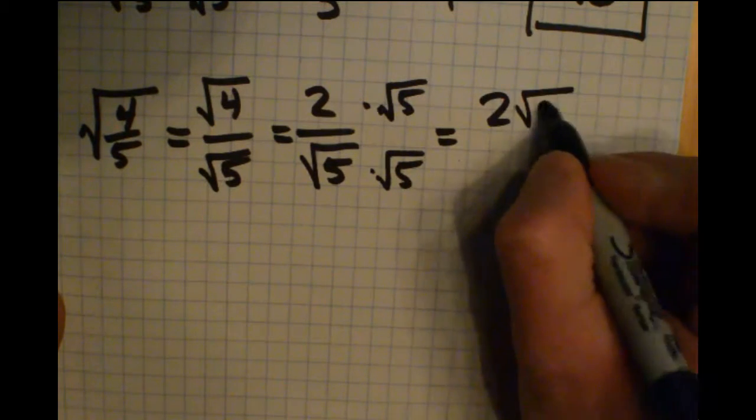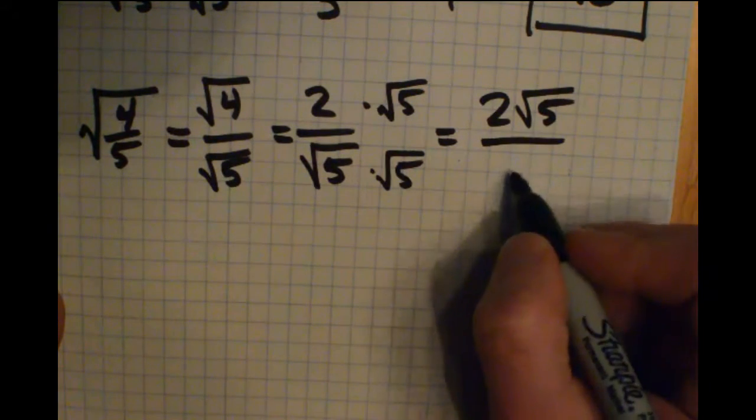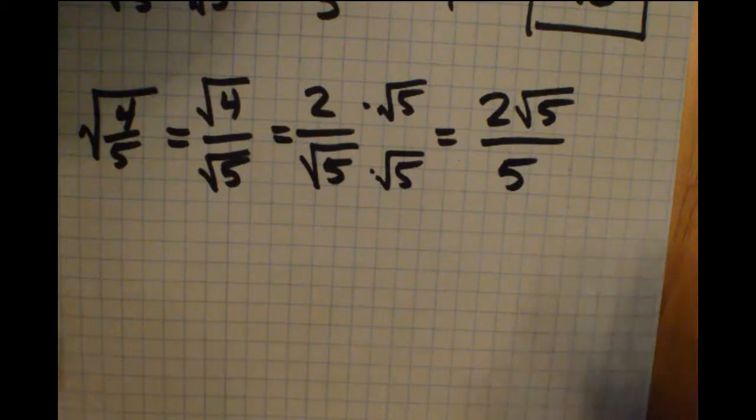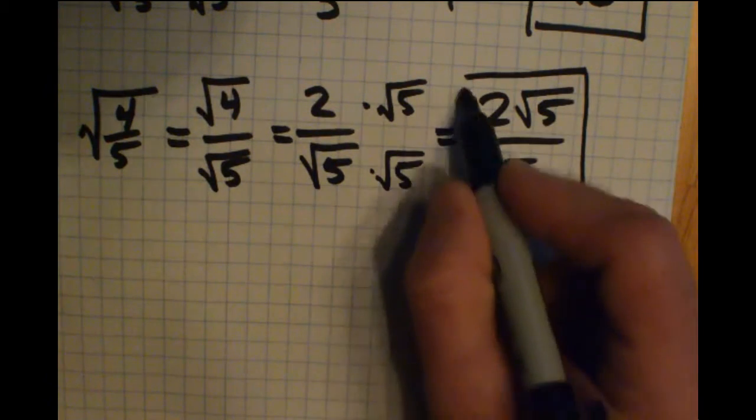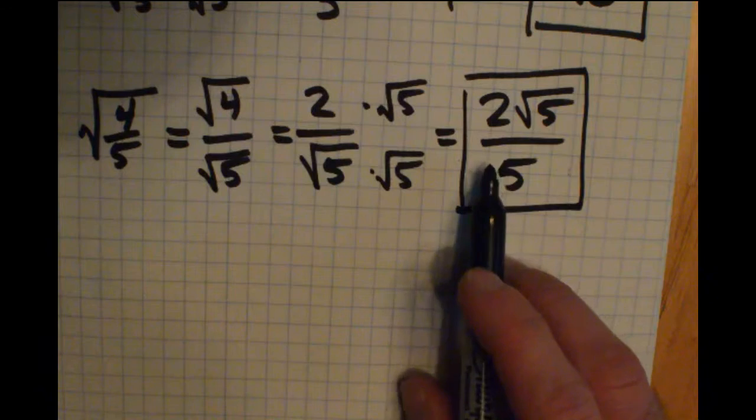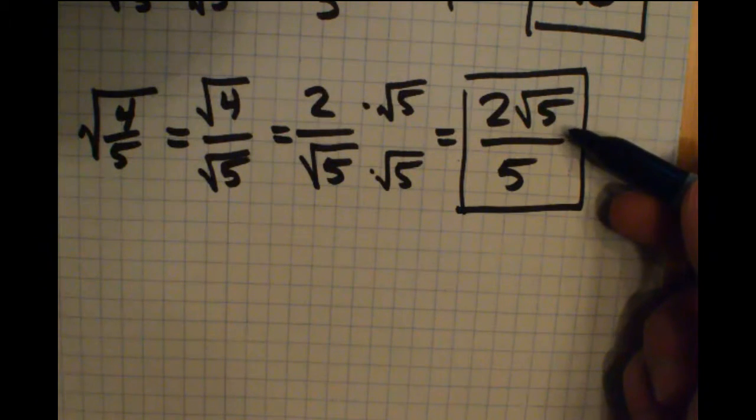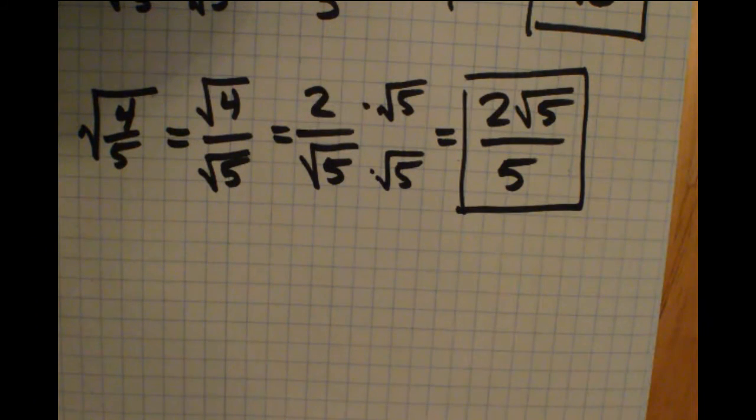So across the top, we have 2 radical 5. In the denominator, we have 5. So we have 2 radical 5 over 5. The 2 over 5 cannot be reduced anymore, and there are no perfect squares that go into 5, so that is completely simplified.